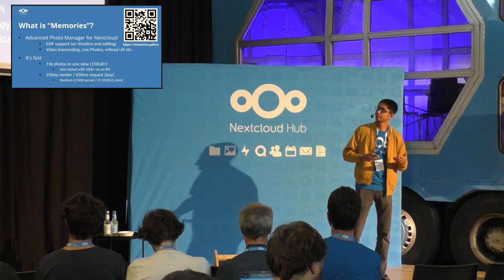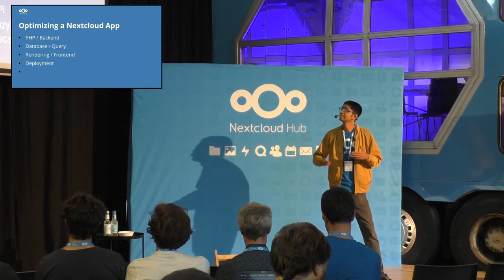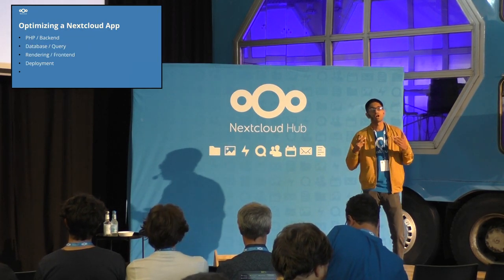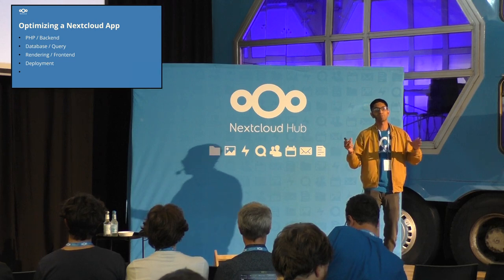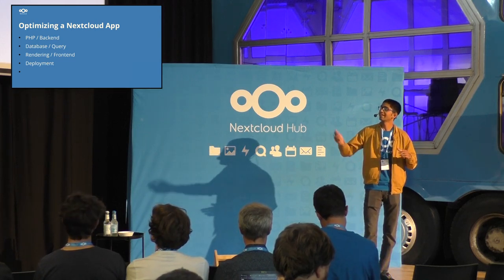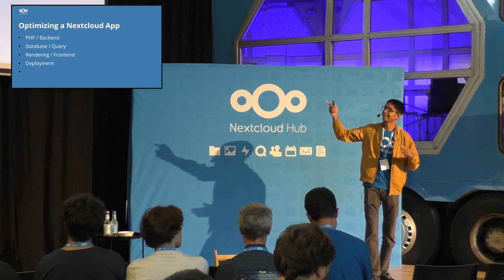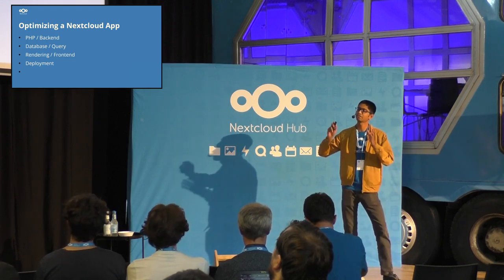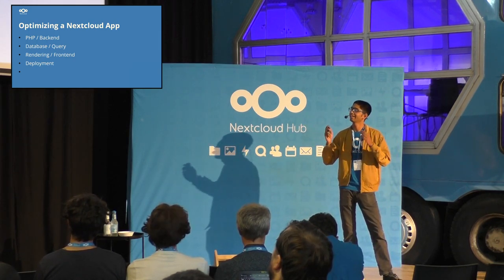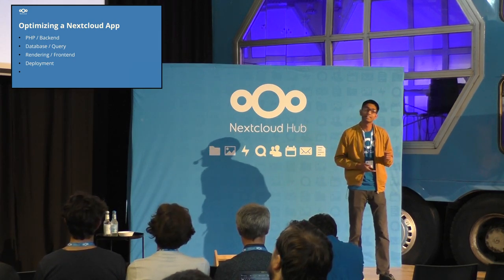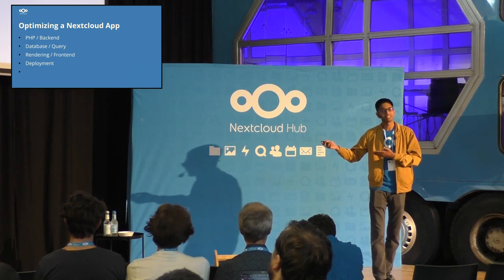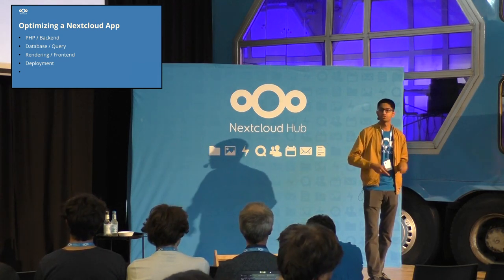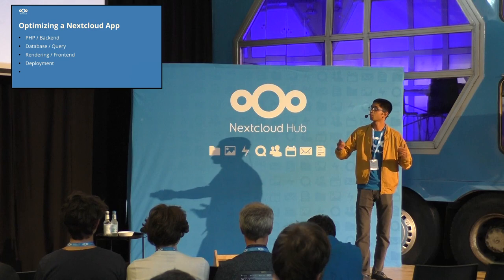So what makes Memories really fast? The first lesson learned is that if you want to optimize an app, you have to do it across the spectrum. Optimizing any one of these four areas is not going to work out. I'm going to try to talk about each of them very briefly. I'm assuming this is about building a PHP app, though of course you can build them in any language.